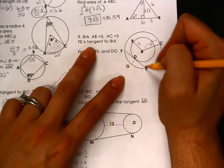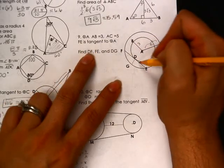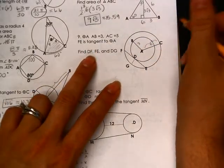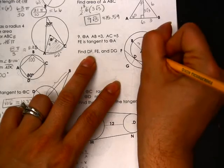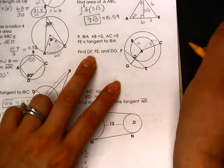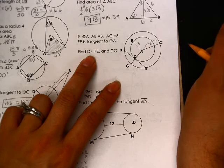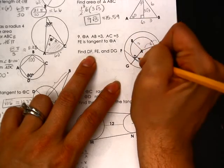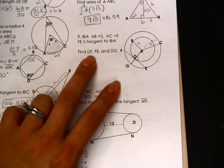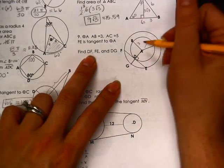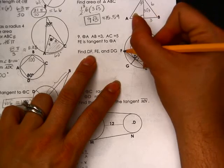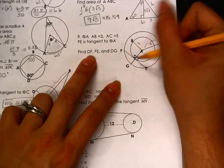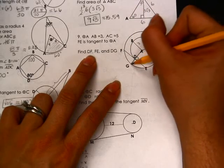And we do know that FE is tangent to circle A. So let's see. What I like is let's draw this line all the way out like that. And remember, the radius at the point of tangency is 90 degrees. And what am I even looking for? Let's see. I'm looking for DF and FE and DG.